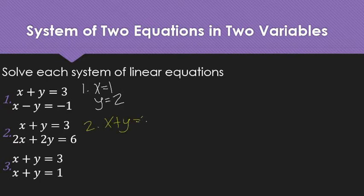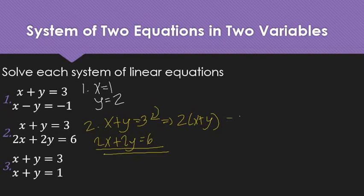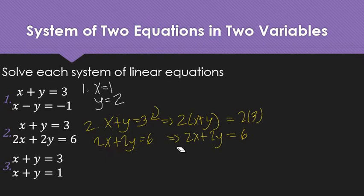We have x plus y equals 3, and 2x plus 2y equals 6. As you might have observed, we can actually get equation 2, the second equation, if we're just going to multiply 2 to this equation. If we will have 2 times x plus y and 2 times 3, we can actually get 2x plus 2y equals 6.